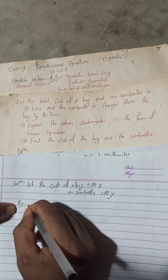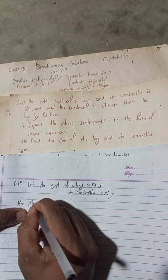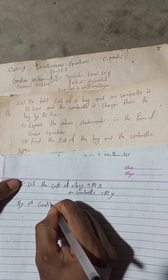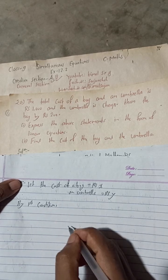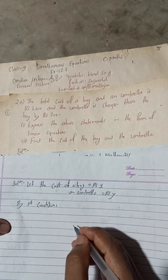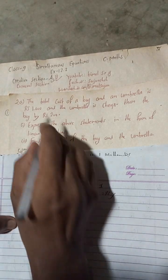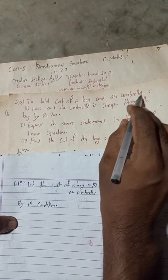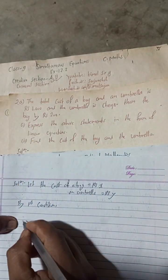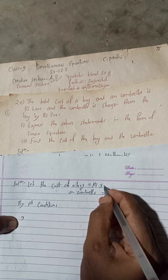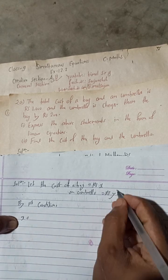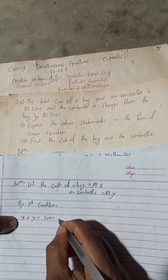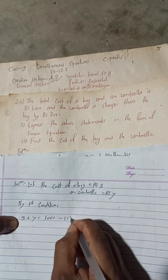Now by first condition: the total cost of one bag and one umbrella is equal to Rs 1000. So we can write here: X plus Y is equal to 1000. This is our equation 1.